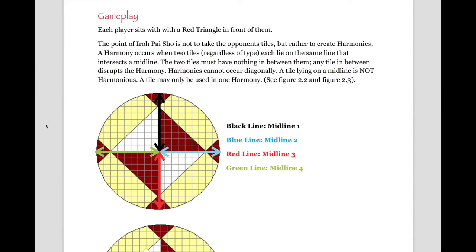Gameplay. In Iroh Paisho, the point isn't to take the opponent's tiles but rather your goal is to create harmonies. A harmony occurs when two tiles, regardless of their type, lie on the same line that intersects the midline. So if you look at the image displayed here, there are four midlines. There's the black, blue, red, and green midlines drawn there. Those are midline 1, 2, 3, and 4. So two pieces lying on the same line that would cross over one of those midlines is a harmony.